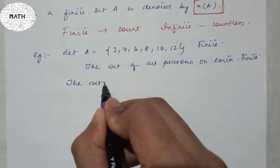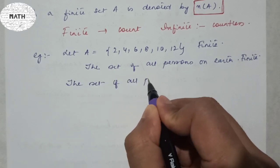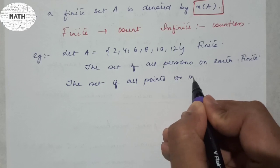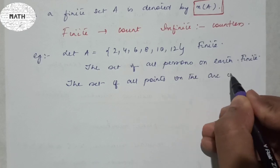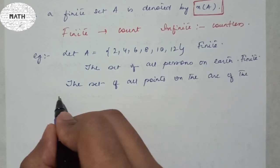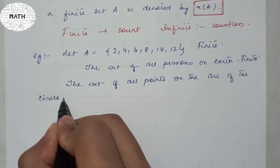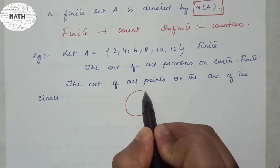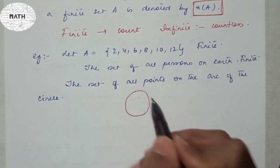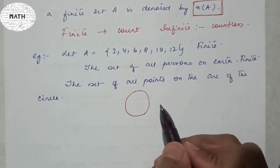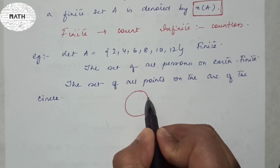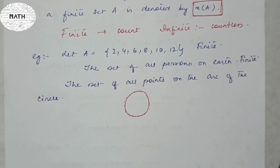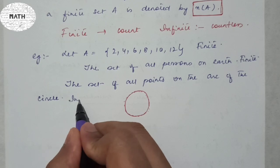If we consider the set of all points on the arc of a circle — if you draw a circle, the number of points on it cannot be counted. There may be infinitely many points, so the answer would be an infinite set.